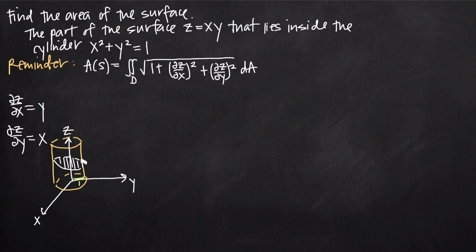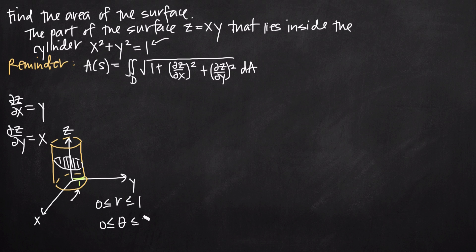Because polar coordinates involve the variables r and theta, we need to define the intervals for both. We know r is the radius, and since the radius of this circle is 1, r goes from 0 to 1 to stay inside the cylinder. Theta goes from 0 to 2π because we're dealing with the entire circle around the z-axis — the angle starts at 0 along the positive x-axis and moves all the way around back to 2π.